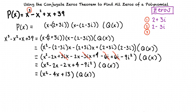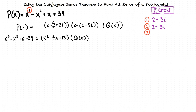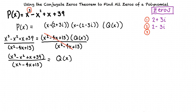After all that simplifying, our equation looks like this: x cubed minus x squared plus x plus 39 equals x squared minus 4x plus 13 times q of x. We are trying to solve for q of x, so the next step is to divide both sides by x squared minus 4x plus 13. This gives us x cubed minus x squared plus x plus 39 divided by x squared minus 4x plus 13 equals q of x. We will use algebraic long division to compute this.